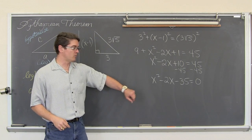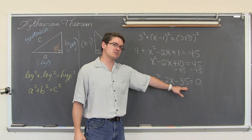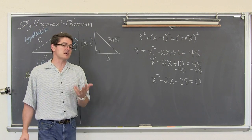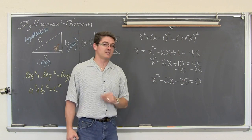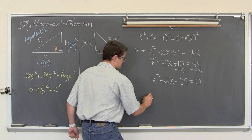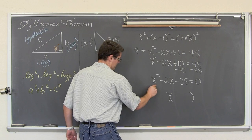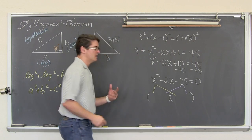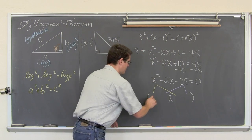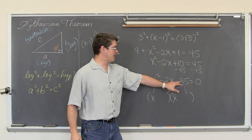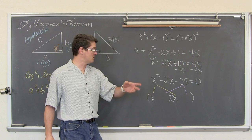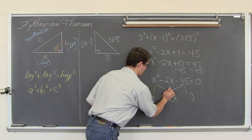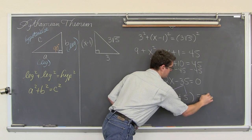When our leading coefficient is 1, we can pay attention to the constant. What factors of 35 subtract to give us a middle term of negative 2? Factors of 35 — there are not that many. What about 7 and 5? Now it is a negative 35, so they need to have different signs. So we are going to factor this as x minus 7 times x plus 5 equals zero.